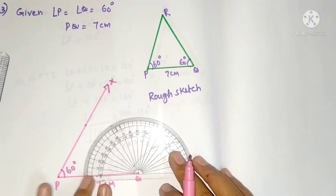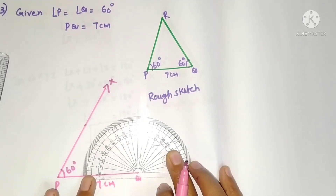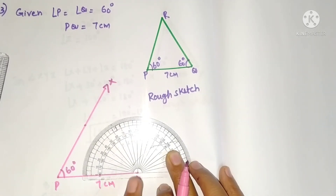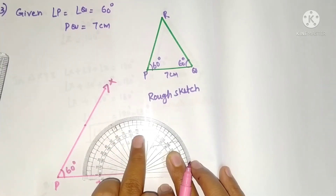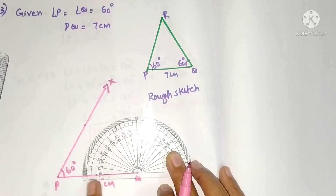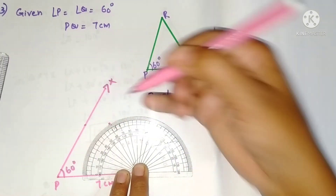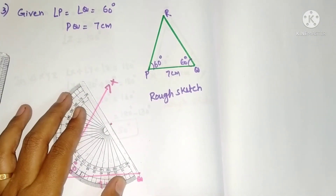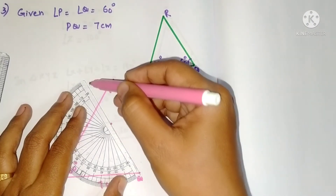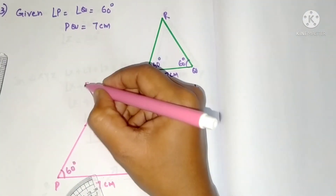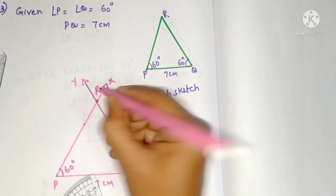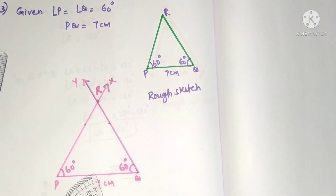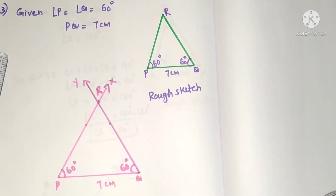Similarly, angle Q is also 60 degrees. Place the protractor on point Q. Since 60 is less than 90, use the left side zero and the above scale — mark 60 degrees here. Just draw another ray QY. The point of intersection of the two rays is R. This gives 60 degrees at both P and Q, and this is the required triangle.